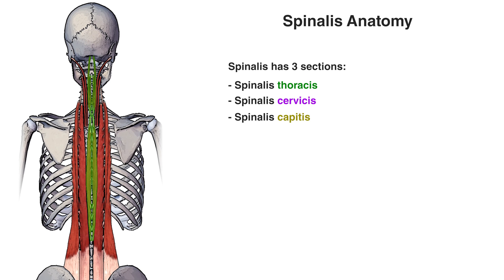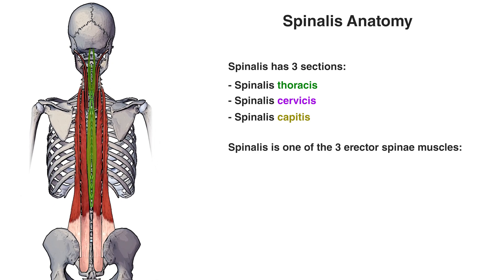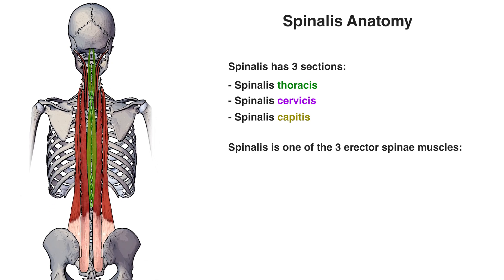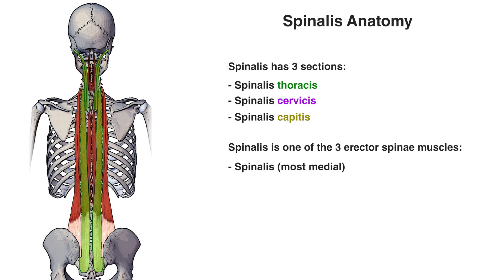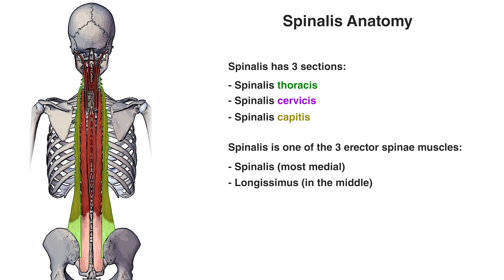The spinalis is part of a muscle group called the erector spinae, and you can see the spinalis highlighted in green here amongst the other muscles of the erector spinae. The erector spinae muscle next to the spinalis is called the longissimus, and the most lateral erector spinae muscle is called the iliocostalis.